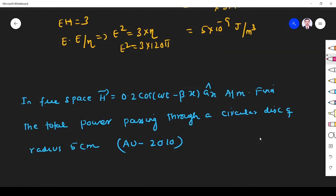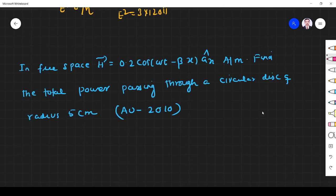The next problem is: in free space, H equals 0.2 cos omega t minus beta x a x ampere per meter. Find the total power passing through a circular disk of radius 5 centimeter. So in free space they are given h value. I want power flowing through a circular disk.